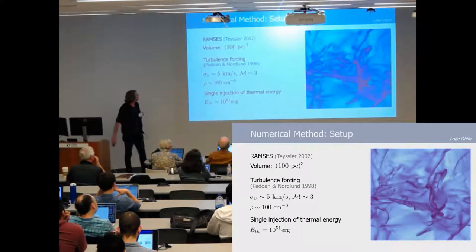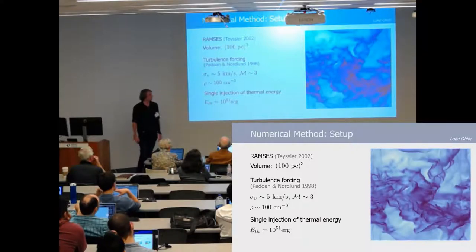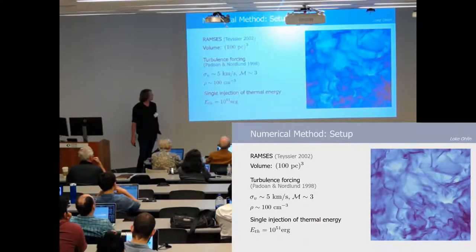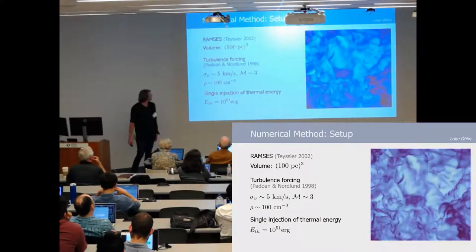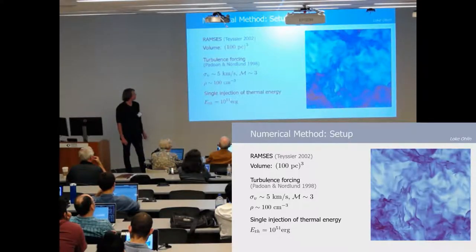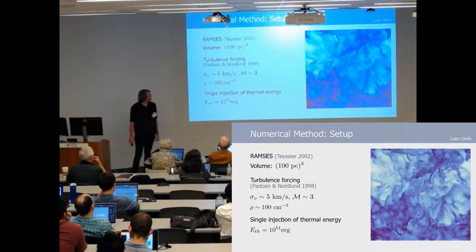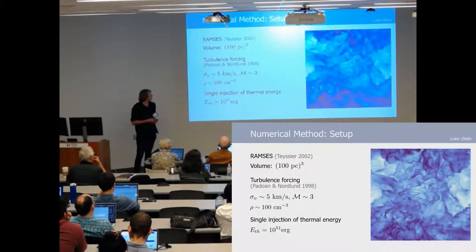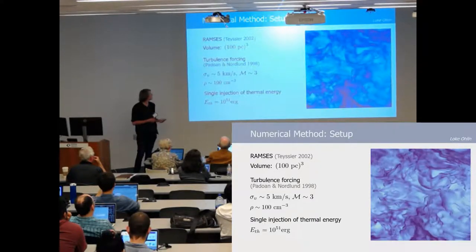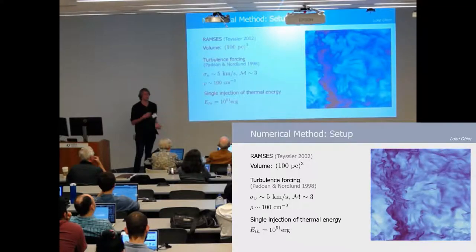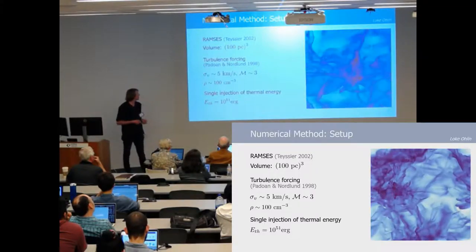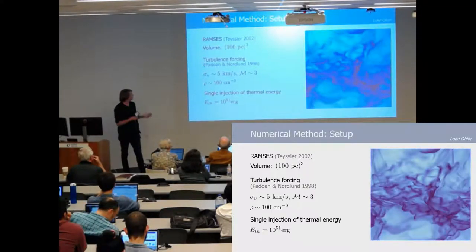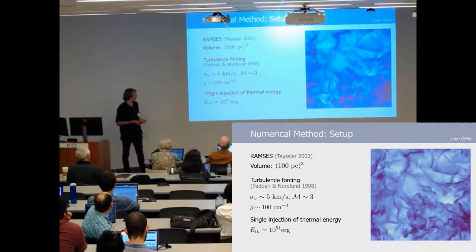So we did this using the AMR code RAMSES in a volume of 100 parsec cube with a turbulent forcing module from Schmidt et al. and Nordlund 1998. Using this we generated a cloud of roughly 5 with a velocity dispersion of roughly 5 kilometers per second and an average density of 100 hydrogen per cubic centimeter.